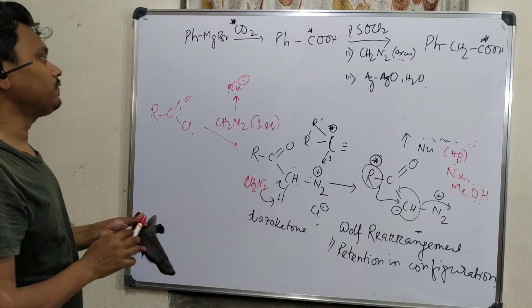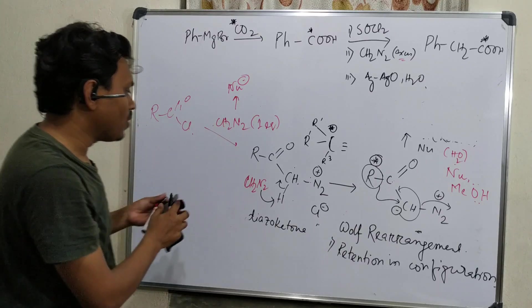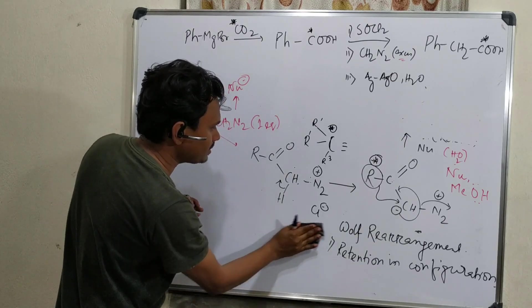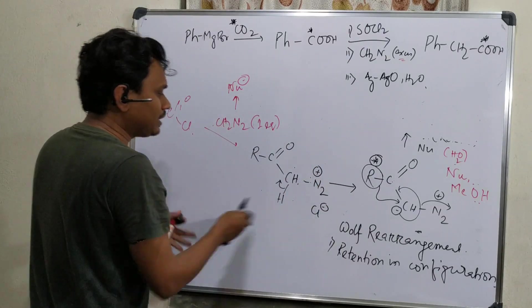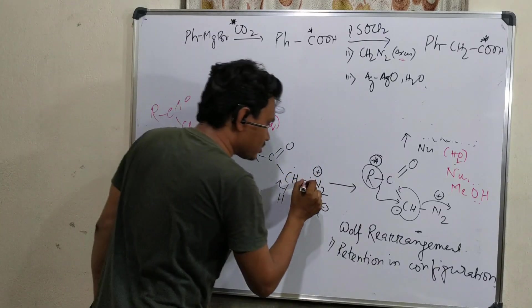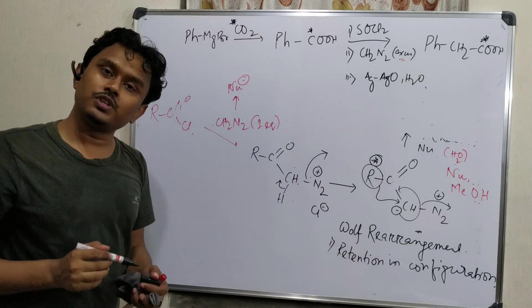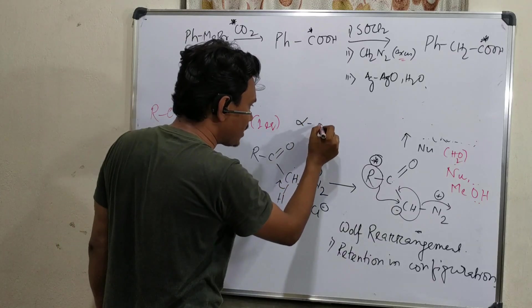The question is: if we use only one equivalent, what will happen? If we use only one equivalent, then product will stop here at this position. If it stops at this position, then you can see nitrogen is a good leaving group, it will leave. And we know if the leaving group is very good, and second, this is alpha to carbonyl.